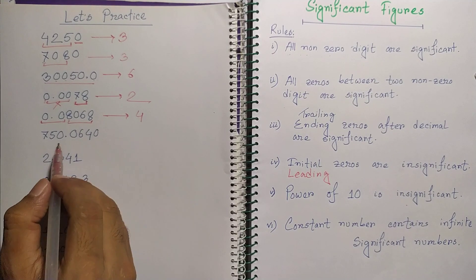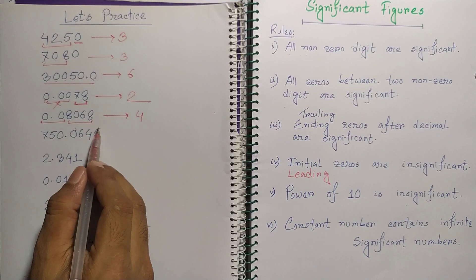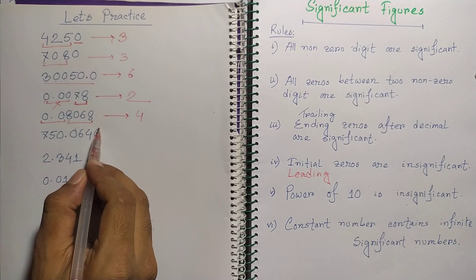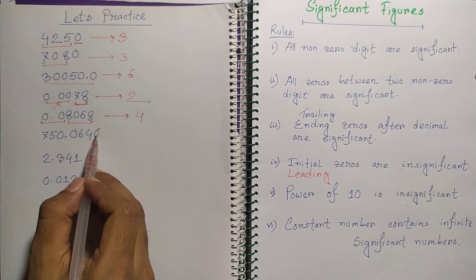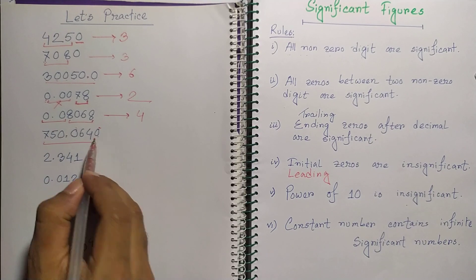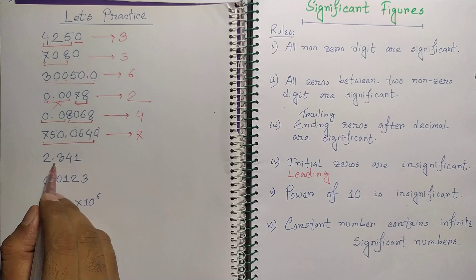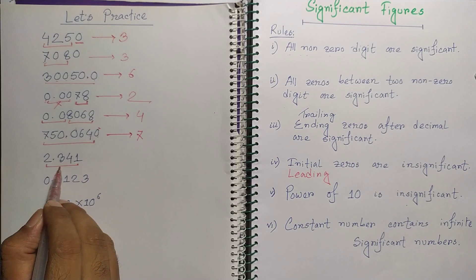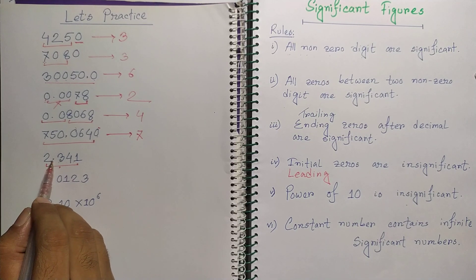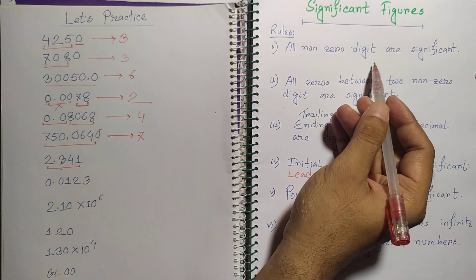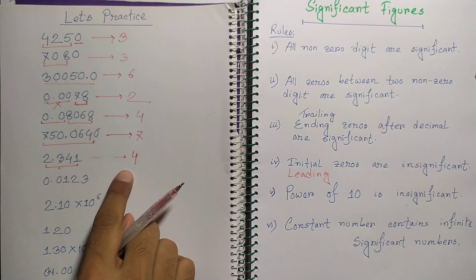For a number with a decimal and 2 zeros after it as ending zeros: since these are trailing zeros after a decimal, they are significant. We count 7 significant figures total. For a number with all non-zero digits and a decimal point: all non-zero digits are significant, giving 4 significant figures.